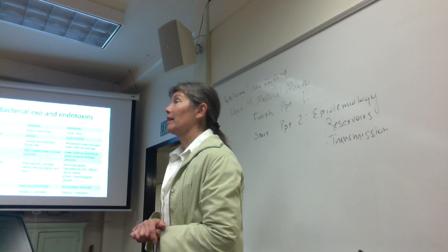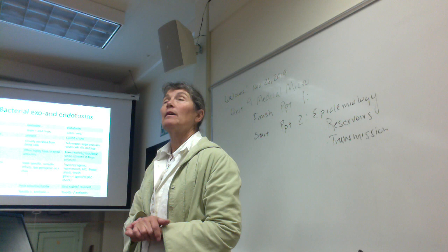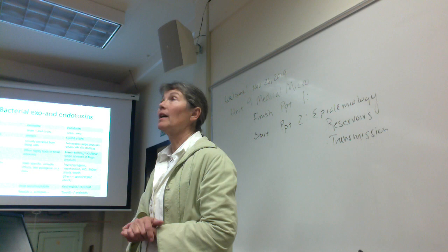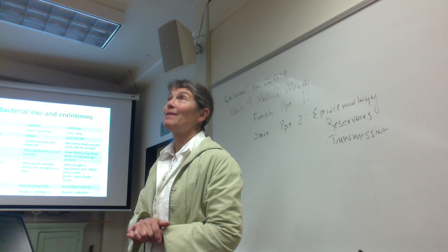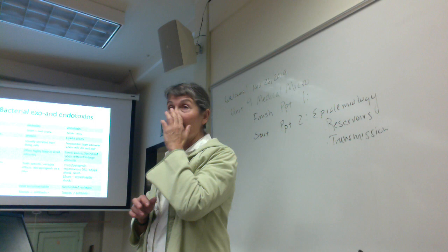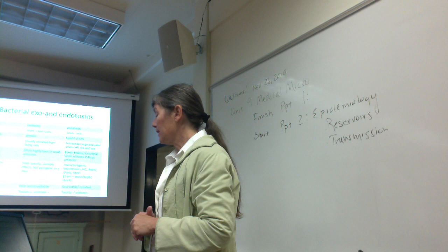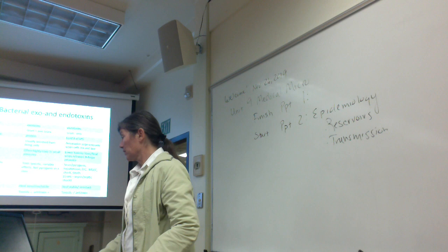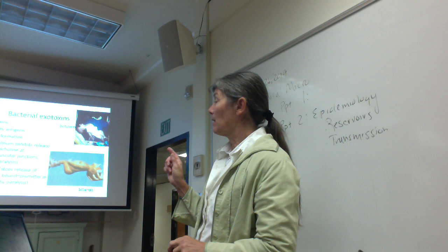Endotoxins are only made by gram-negative bacteria. Very importantly, we can make toxoids out of exotoxins but not out of endotoxins. We can make protective antitoxin antibodies against exotoxins, but we cannot make antitoxin against endotoxins. Those are classic exam questions on exotoxins and endotoxins.